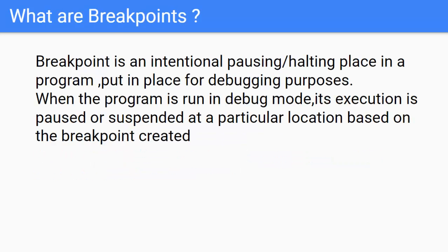What are breakpoints? A breakpoint is an intentional pausing or halting place in a program put in place for debugging purposes. When the program is run in debug mode, its execution is paused or suspended at a particular location based on the breakpoint created. Breakpoints could be of multiple types — line breakpoint, conditional breakpoint — but it will be more clear when we do it hands-on.